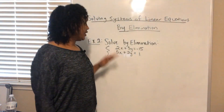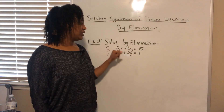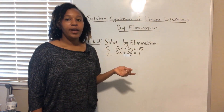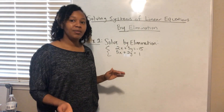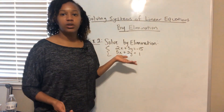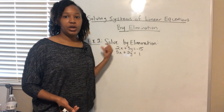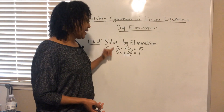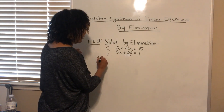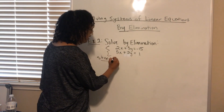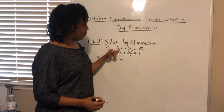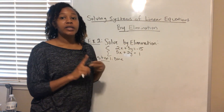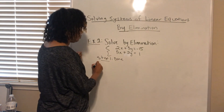For example two, we want to solve this system by elimination: 2x plus 3y equals negative 15, and 5x plus 2y equals 1. The first step is to make sure both equations are in standard form with x's and y's on one side and the constant on the other. In this case, step one is already done — both equations are already in the form ax plus by equals c.